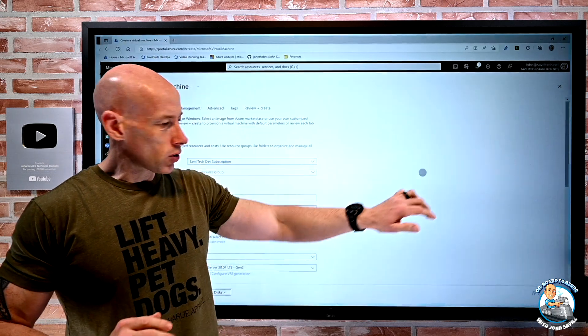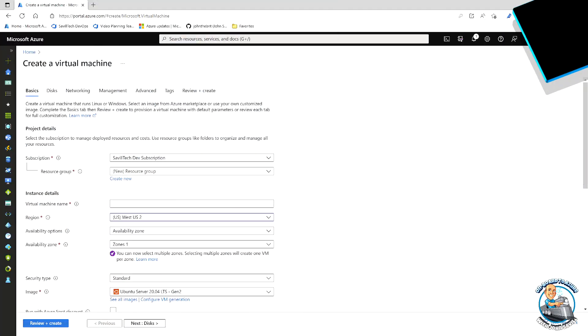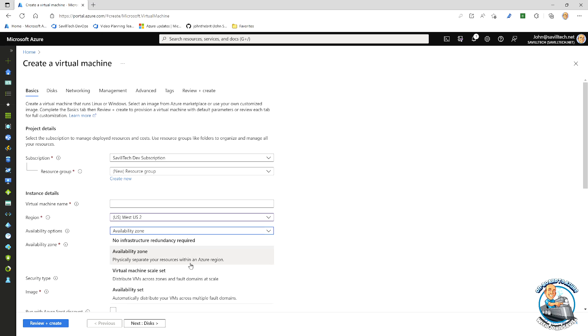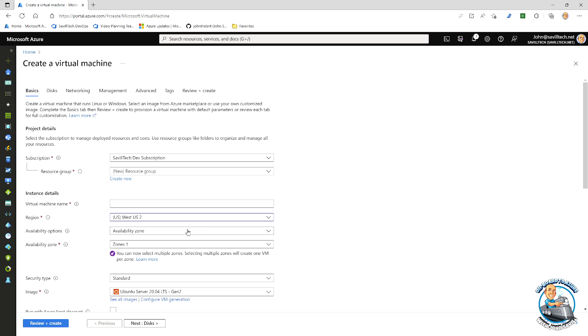So if we quickly go and look at the portal, we can see this new option. So right down here, and it's being rolled out right now, you have the availability options as normal. Hey, do you want to deploy this to an availability zone, a VM scale set, or an availability set?